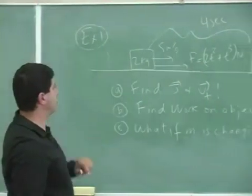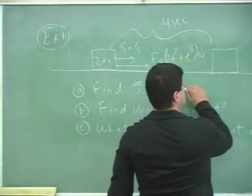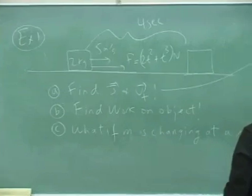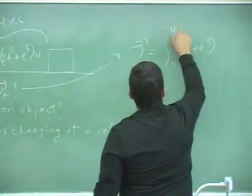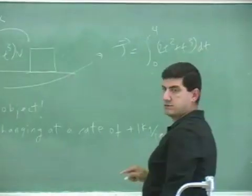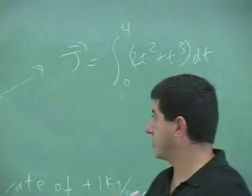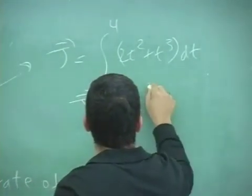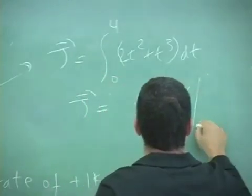So in order to find the j, now we need to integrate because the force is changing. So integral 2t squared plus t cubed from 0 to 4 dt. We can integrate the impulse. We can integrate the force to get the impulse. And we have t cubed plus t to the fourth over 4, 0 to 4.